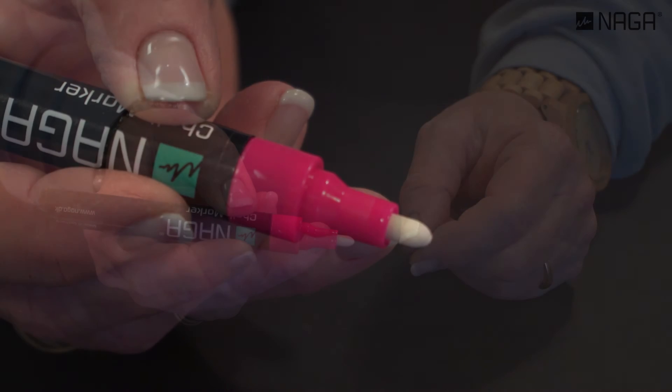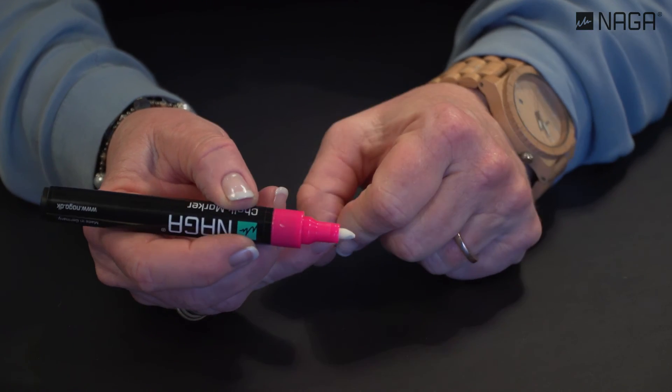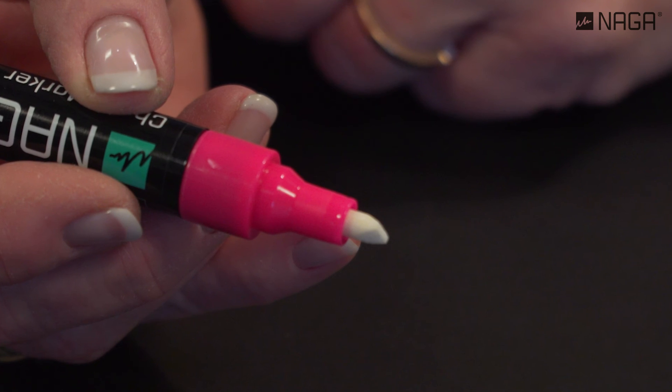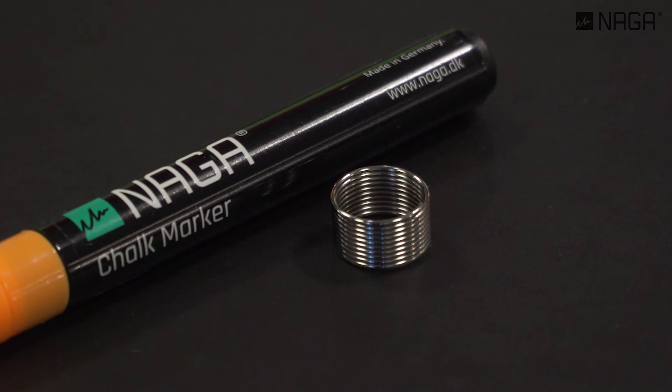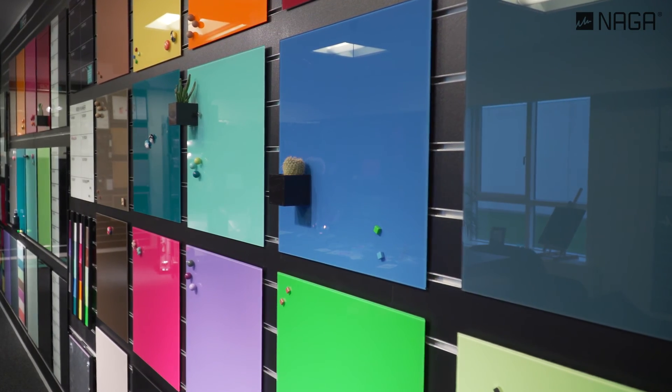The marker has a reversible nib, so you can change it from bullet to chisel point. A ring on your marker enables you to attach it to your glass board by the use of a super strong magnet.